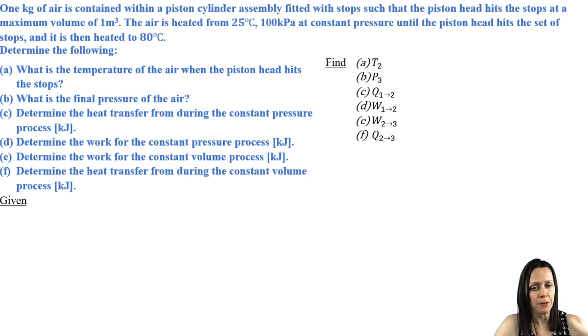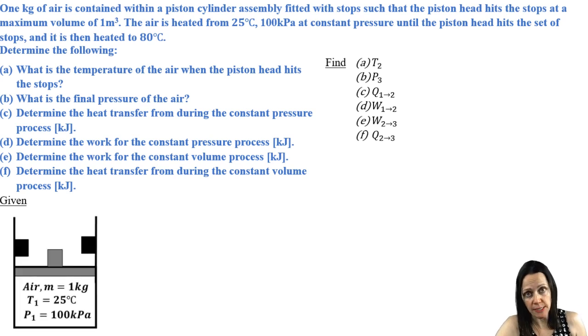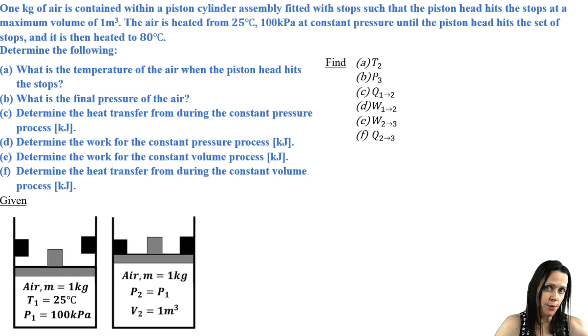All right, so I've got a problem here. I'm going to show how we walk through the problem in our givens. So I've got this piston cylinder, it's fitted with a set of stops. Initially, the air is initially at 25 degrees Celsius and 100 kilopascals. It undergoes a constant pressure process until that air has expanded to a final volume of one meter cubed.